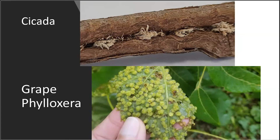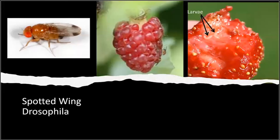Another common one is spotted wing drosophila, an invasive species that we have been dealing with for several years. It causes damage by laying eggs in ripe fruit, and then the larvae hatch inside the fruit, which you can see in the right-hand picture. All of these are just some examples of the different mechanisms of insects — common ones that can damage fruit and what kind of damage they cause.